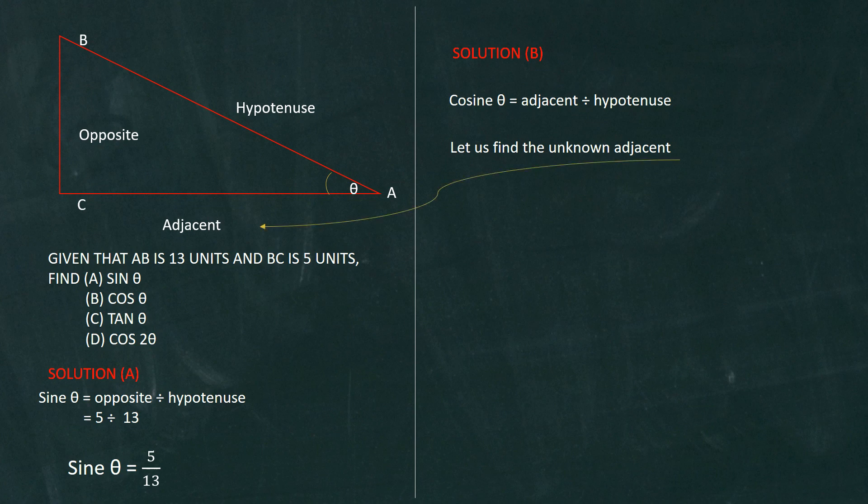So let us try to find what the adjacent is. To do this, we're going to have to use the Pythagorean theorem. Let's call side BC X, let's call side AC Y, and the hypotenuse, let's call side Z. Now using Pythagorean theorem, in order for you to find the adjacent, in this case Y, we have to find Y using the Pythagorean theorem.